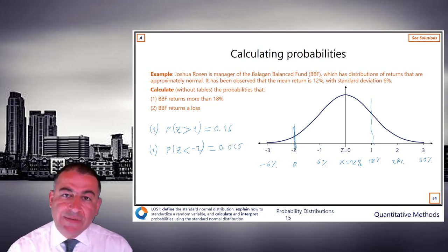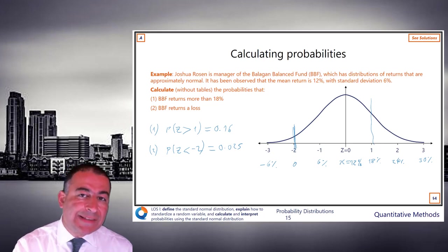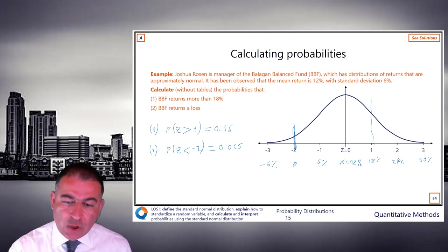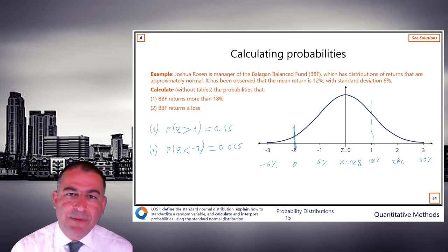Using tables, PZ is less than minus 2 is the same as Z being bigger than 2, and 2.5% approximately, because we know in fact that's an accurate number with 1.96. 2 is a close enough approximation. So hopefully you got both of those right. That's section 4. We have one further section to wrap this reading up.